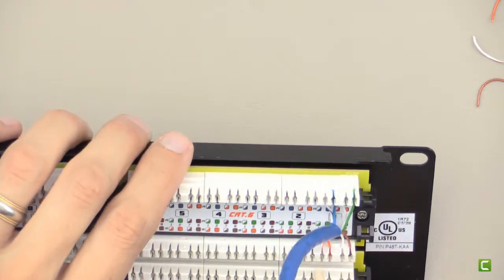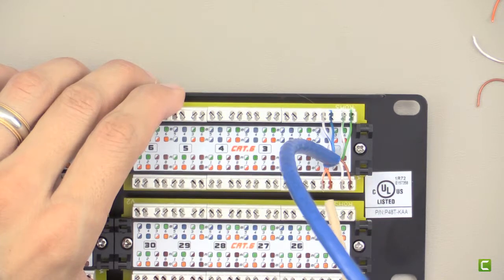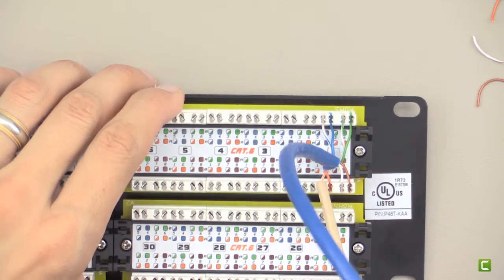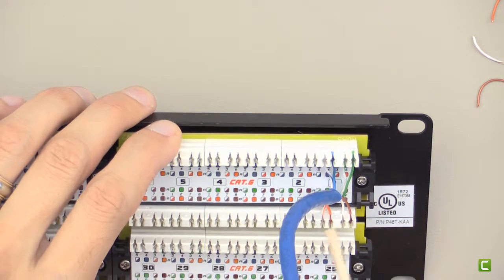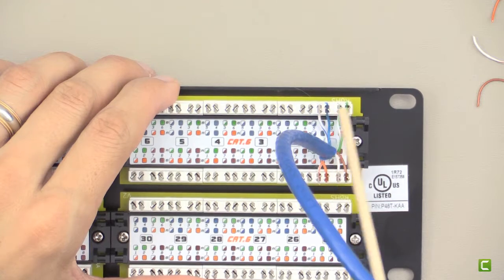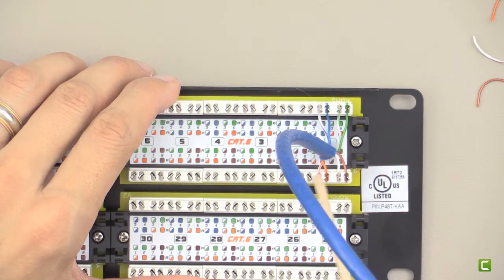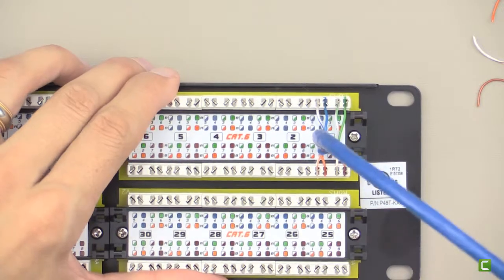So that's how you do punch-downs on this. You just got to make sure that it's meeting the requirement, that the specification is met. If you're using 568B on both ends, make sure you're meeting those colors and that it's exactly what it shows: white-orange, orange, white-brown, brown, white-blue, blue, white-green, green. That's what we have here, and so that's the connection for this patch panel.